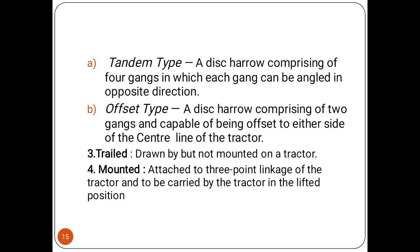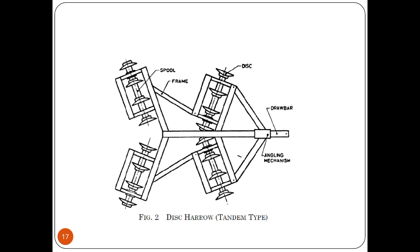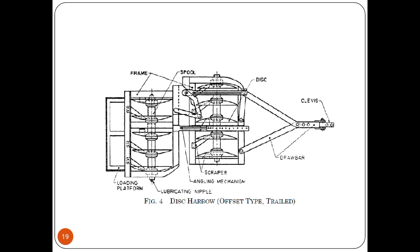The offset type disk harrow comprises two gangs and is capable of being offset to either side of the center line of the tractor. Trail type is drawn by but not mounted on a tractor. Mounted type is attached to the three-point linkage of the tractor and is carried by the tractor in a lifted position. You can see the different parts of the disk harrow — single action, tandem type, and offset trail type disk harrow.